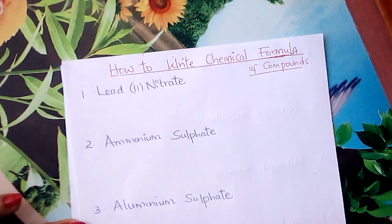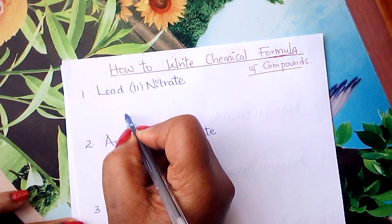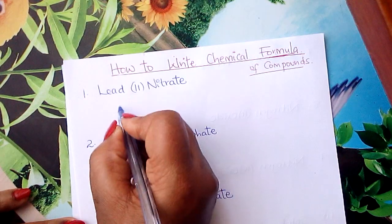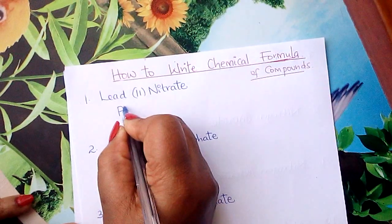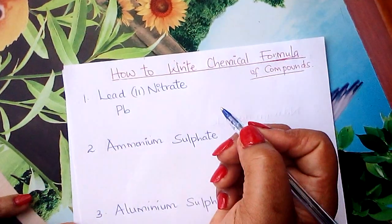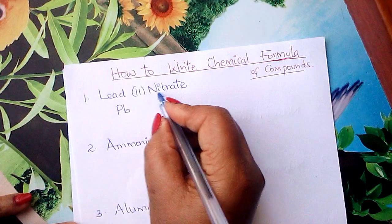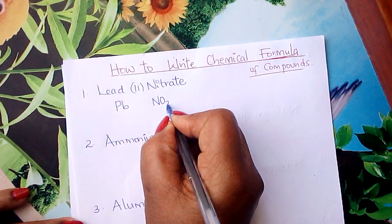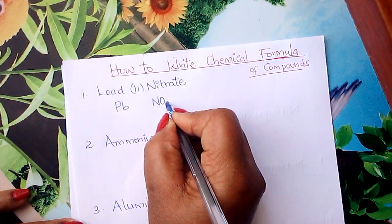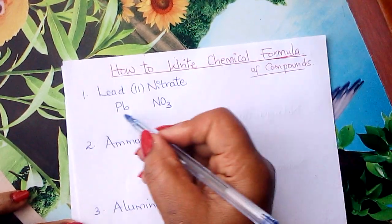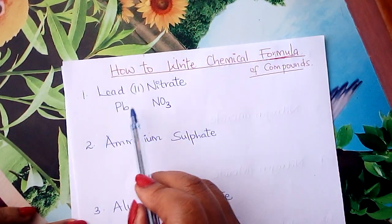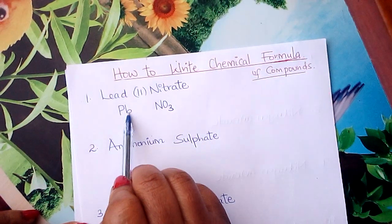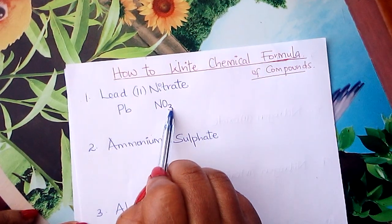Lead — the symbol is Pb. Master the symbol, learner: Pb. Nitrate is NO₃, even from the song. From the valency song in my channel, you'll see all this. So, lead symbol is Pb, nitrate is NO₃.